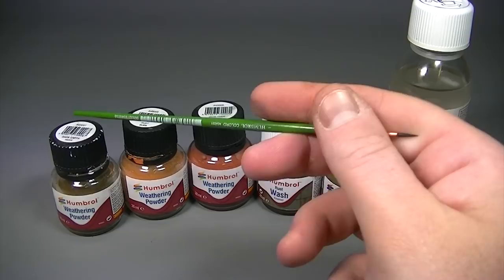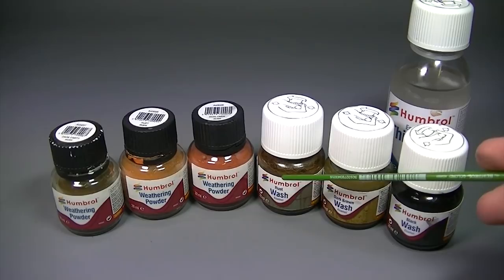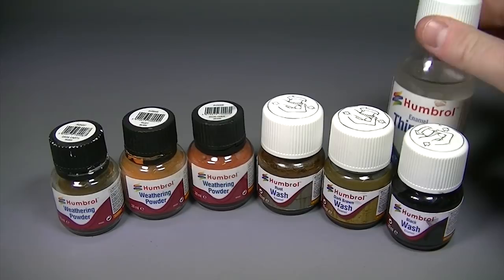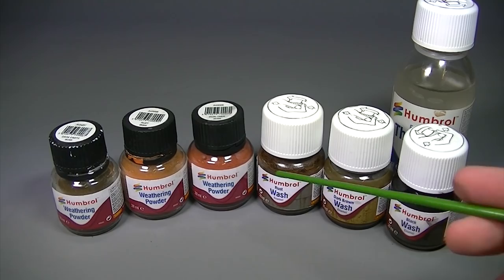We're not going to call it a day however, instead we're going to use dark earth, rust and iron oxide weathering powders with the rust, dark brown and black shades of Humbrol enamel wash. We're going to throw in a splash of Humbrol enamel thinners and we're going to give this building a rusty finish that looks like it's about to fall down.